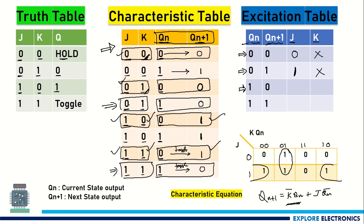So J is changing from 0 to 1, so in place of J I need to write X. Here K is 1 and here also K is 1, so let me write K as 1.